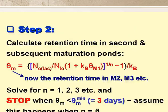Step 2 is to calculate the retention time in the second and subsequent maturation ponds. And we solve the equation on the slide, first of all for N equals 1, then for N equals 2, and so on, until our calculated value of theta M is less than theta M min, that is to say, less than three days. And we'll assume this happens when N equals E.